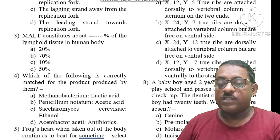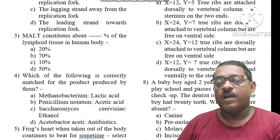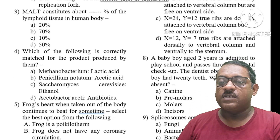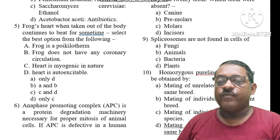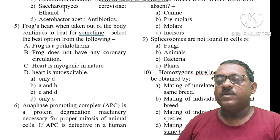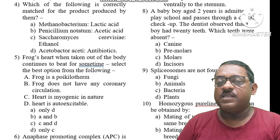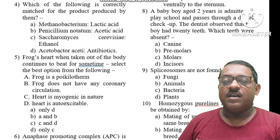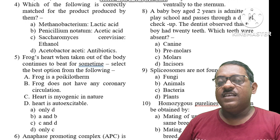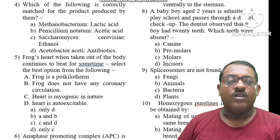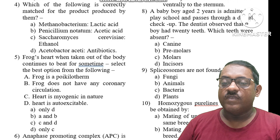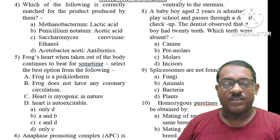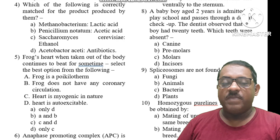Which of the following is correctly matched for the product produced? Methanogens produce methane gas. Lactobacillus produces lactic acid. Saccharomyces cerevisiae produces ethanol. Acetobacterium produces acetic acid. The right answer is Acetobacterium — acetic acid production. Penicillium notatum is also noted.